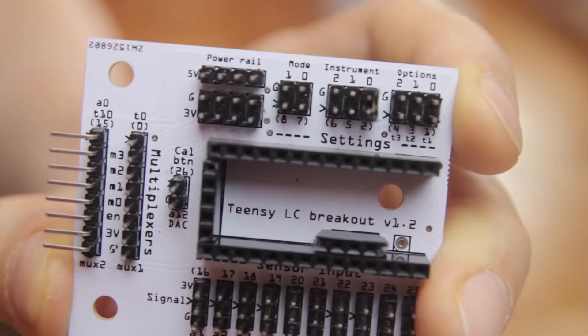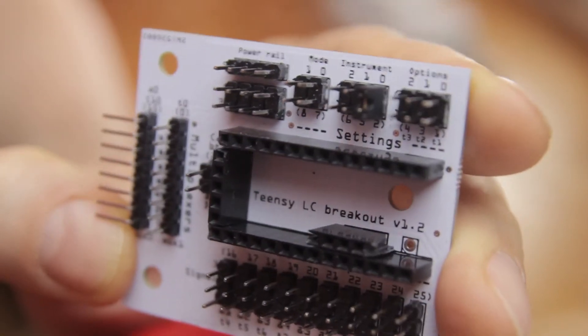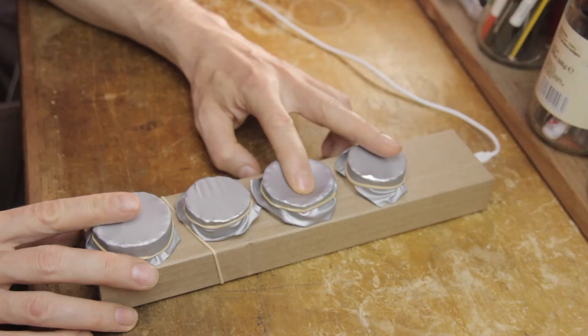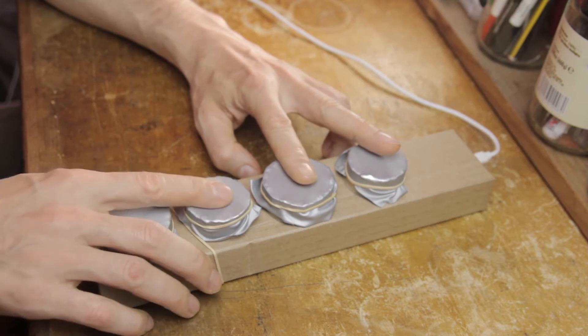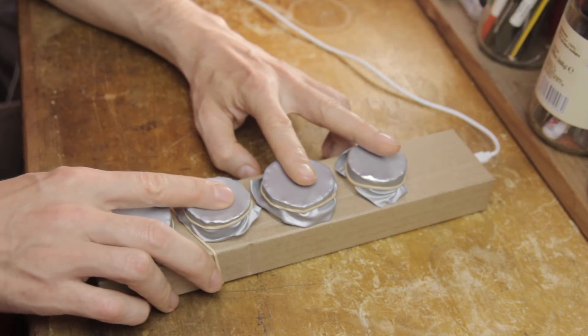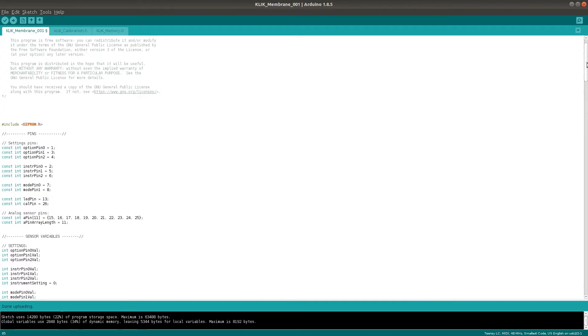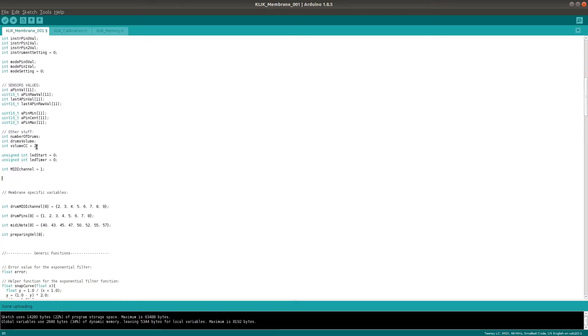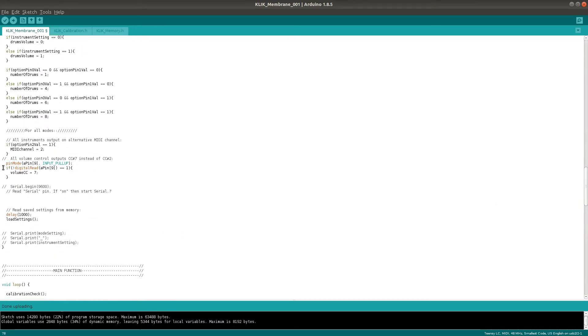This is activated by inserting a jumper into instrument pin zero. The default output for continuous control is CC number two, but just like on the other click instruments which use continuous control,